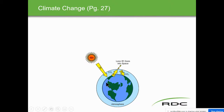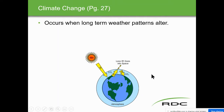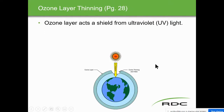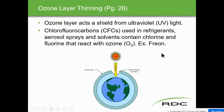Climate change occurs when long-term weather patterns alter. Water vapor, carbon dioxide, and methane gas all absorb infrared, which causes them to heat up — and if there's a lot of that in the atmosphere, the world will heat up. Ozone layer thinning: the ozone layer acts as a shield against ultraviolet light from the sun. We have holes in the ozone layer. Chlorofluorocarbons — CFCs — used in refrigerants, aerosols, and solvents contain chlorine and fluorine that react with ozone. The big one used to be freon; we don't use freon anymore.